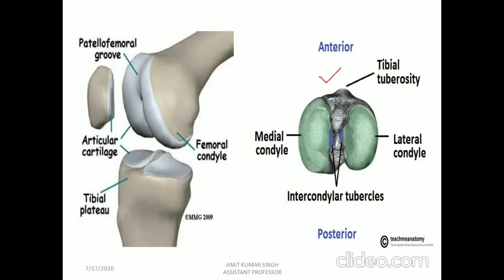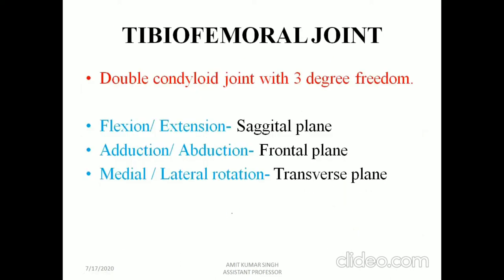Here is the superior view of the tibial condyles. The medial condyle is larger in AP (anterior-posterior) diameter. They are separated by the intercondylar tubercle, and the tibial tuberosity is on the anterior part. The patellofemoral groove is where the patella articulates with the lower end of the femur. The white color structures visible are articular cartilage. The tibiofemoral joint is a double condyloid joint with three degrees of freedom: flexion-extension, adduction-abduction, and medial-lateral rotation.